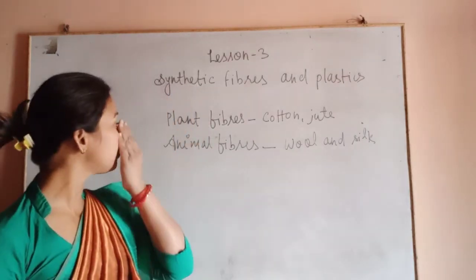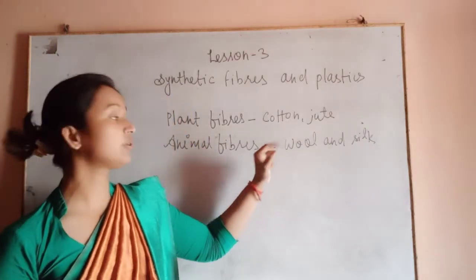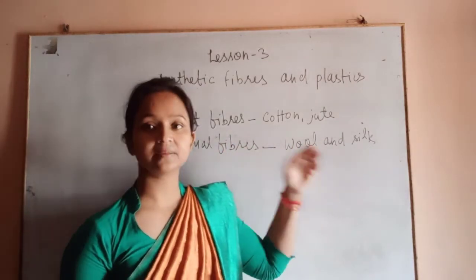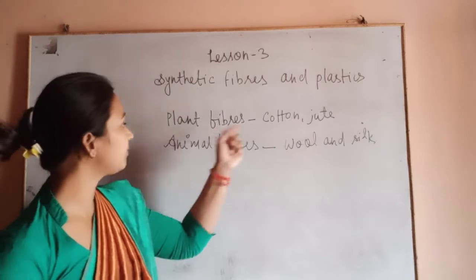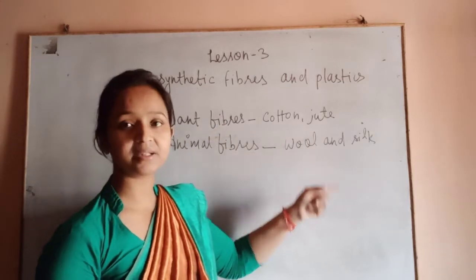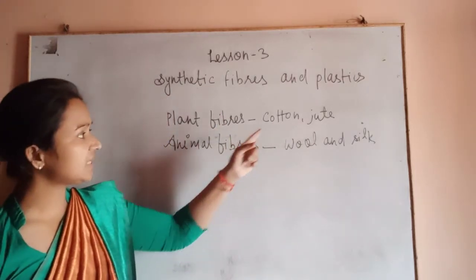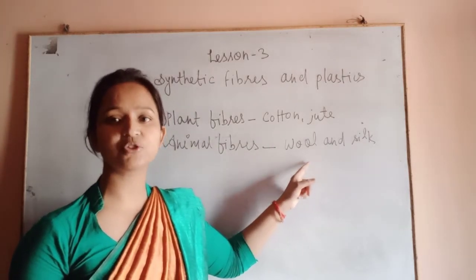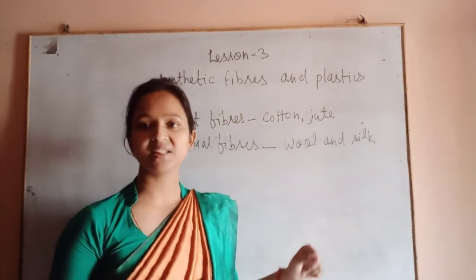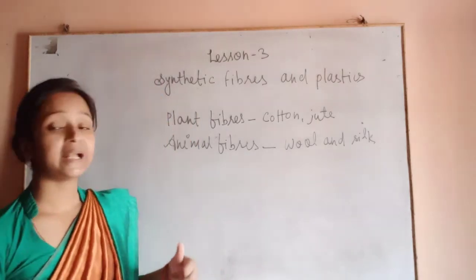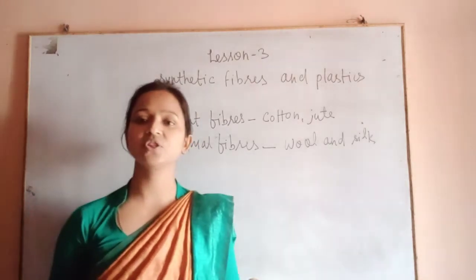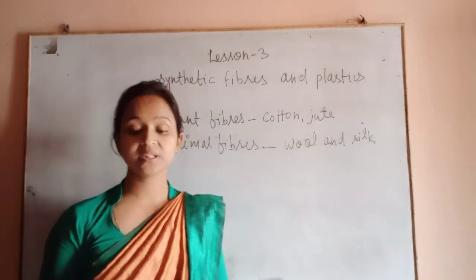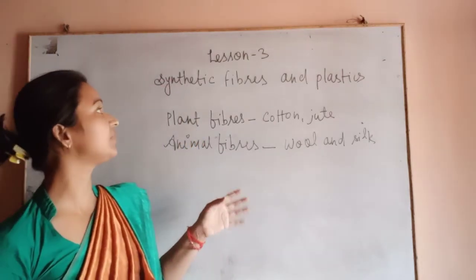So this is the introduction. Plant fibers are cotton and jute, animal fibers are wool and silk. Collectively we name them as natural fibers because we get them naturally. And fibers which are made by man are called man-made fibers. That is the introduction of the fibers.